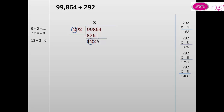We try 5: 5 by 292 equals 1,460 — still more than 1,226. We take 4. 4 by 292 equals 1,168, which is less than 1,226. We put 4 above 6. 1,226 minus 1,168 equals 58. 58 is less than 292, the divisor.